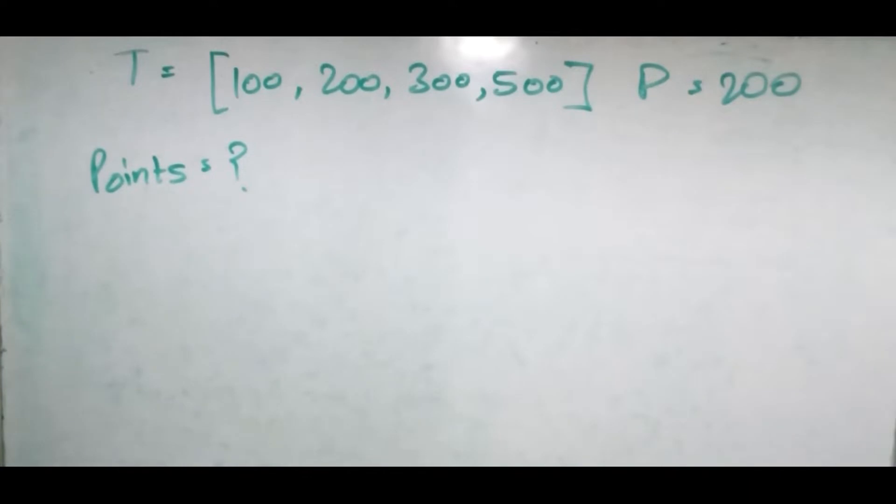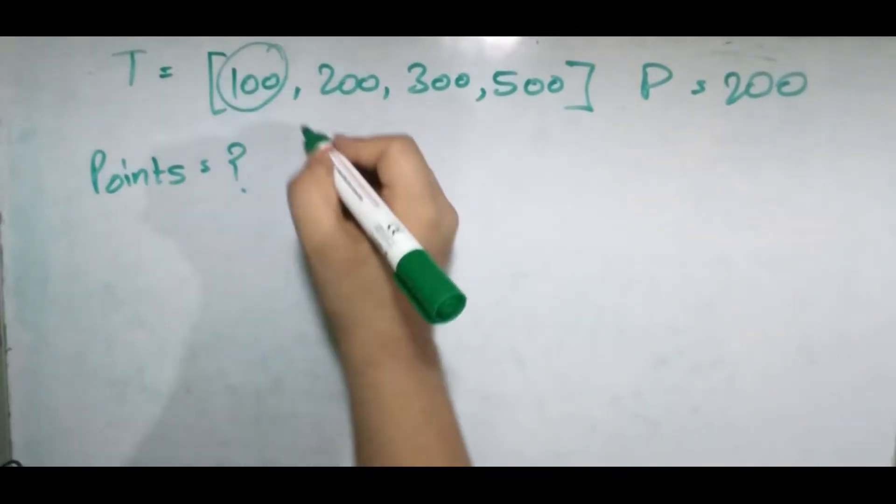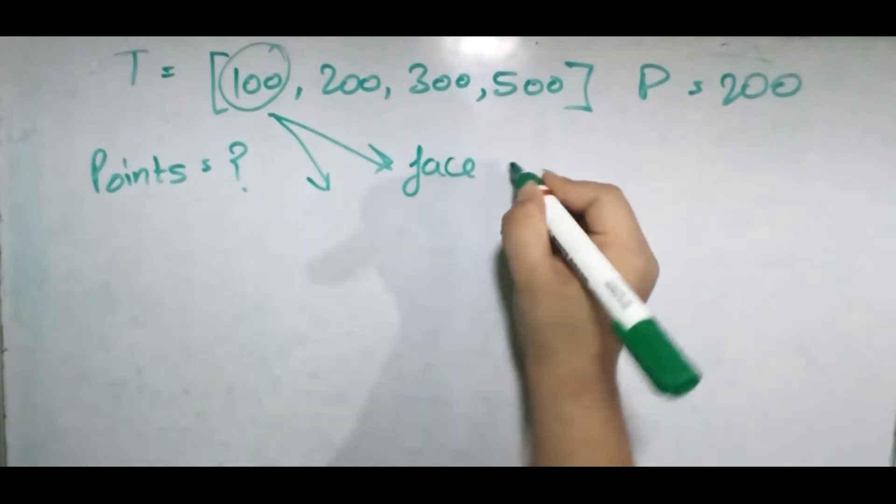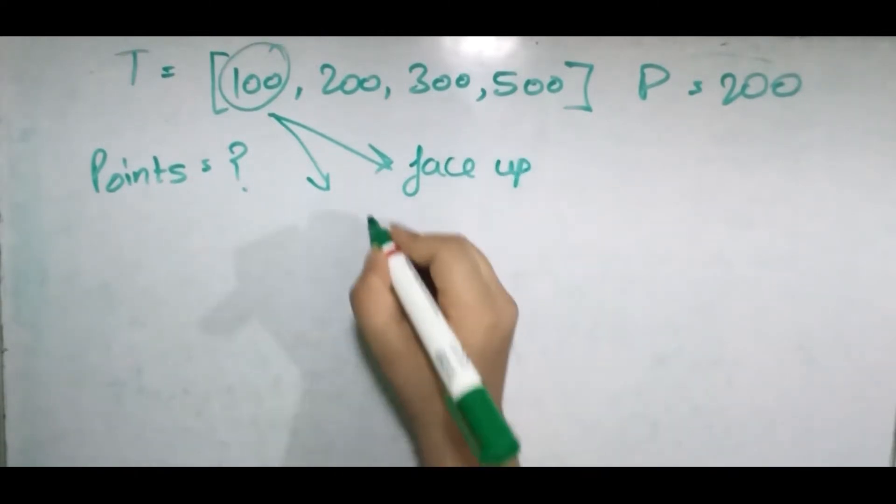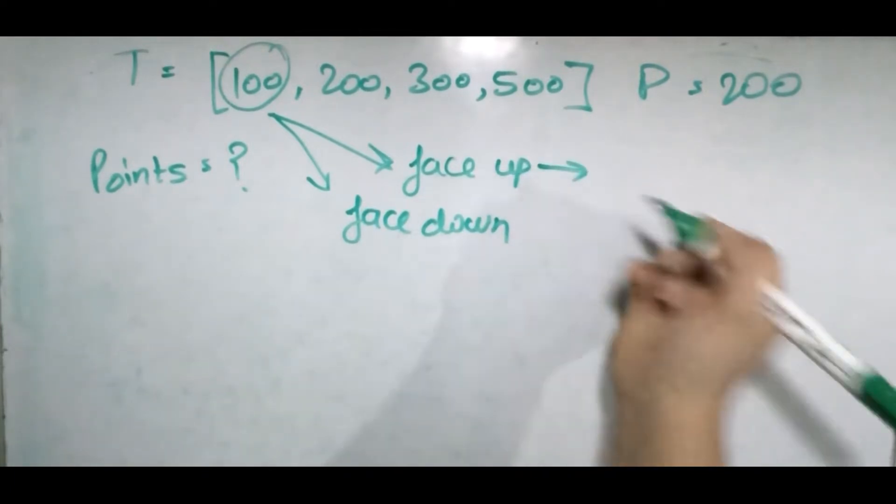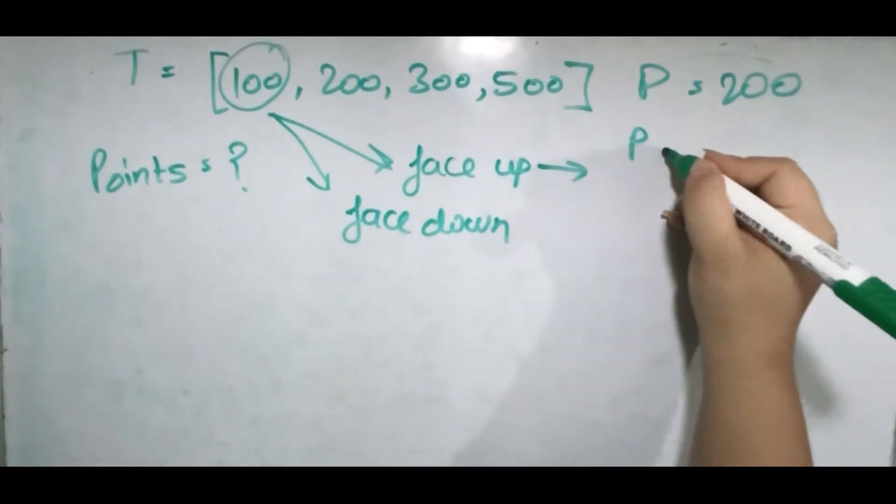So what are points? For every token we have two ways we can play: we can either use it face up or face down. If we choose to play it face up, our power will decrease by 100 and our points will increase by one.